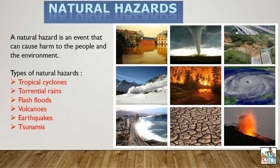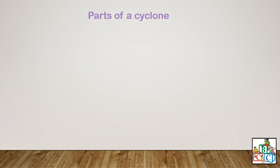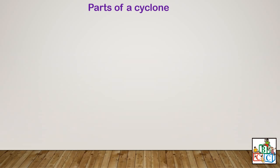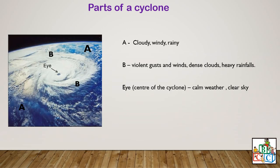Let us start with tropical cyclones. Take a look at the picture. Let us now take a look at the parts of a cyclone. Take a look at the different parts written as A, B, and then you have the eye of the cyclone. Part A is where the weather is very cloudy, windy and rainy.